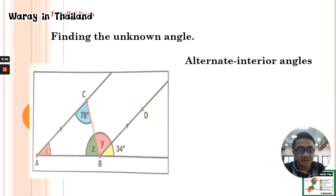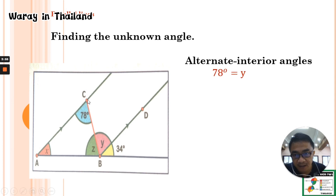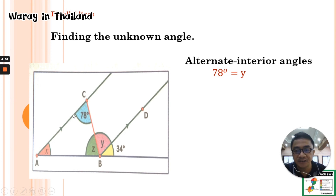By means of alternate interior angles, using the transversal line BC with the parallel lines, the given angle of 78 degrees is equal to angle Y by means of the alternate interior angles.